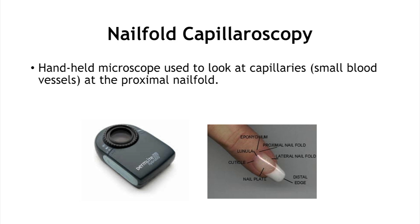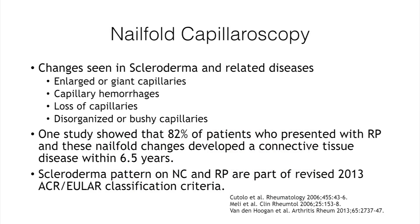If you go to a scleroderma clinic, a physician will also take a look at your nailfold capillaries. We use an instrument called the dermatoscope, a capillaroscopy microscope, to look at the capillaries just proximal to the nailfold. Nailfold capillaroscopy can be really helpful in the diagnosis of systemic sclerosis and related diseases. Changes seen include giant or large capillaries, hemorrhages in the capillaries, loss of capillaries, and disorganized capillaries.